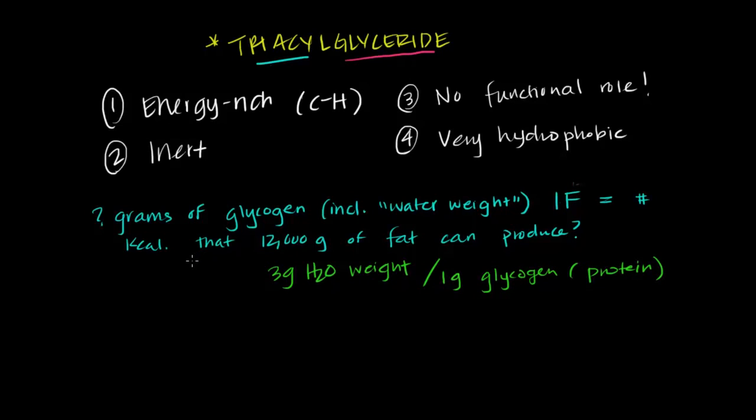Alright, so to answer this question, we first need to find out how many kilocalories can 12,000 grams of fat produce? And that's simply 12,000 grams of fat, right, times, from the table above, I'll remind you, we said that for every gram of fat we can burn about 9 kilocalories of energy. And because we're just trying to get a ballpark number, I'm going to go ahead and round that up to about 10 kilocalories, okay? And that is going to be equal to 120,000 kilocalories.